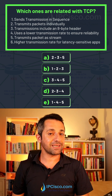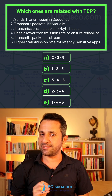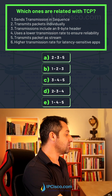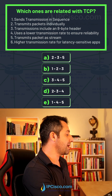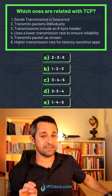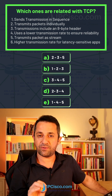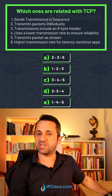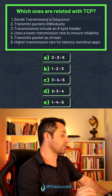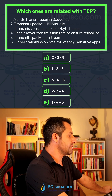What do you think? Which ones are related with TCP? Let's go through the choices one by one. Sends transmission in seconds — yes, this is the property of TCP, transmission control protocol. Transmits packets individually — no, this is not true for TCP.